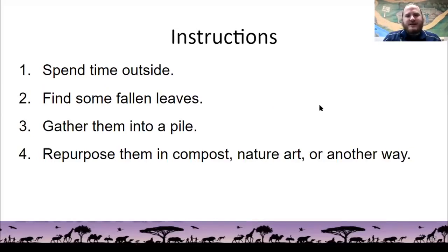And the instructions are, first, spend some time outside. Fall is awesome. There's a lot of amazing things to see and experience in the fall. So don't feel like just because it's getting a little bit colder out that you have to automatically start spending all of your time inside. And then when you're outside, find some fallen leaves on the ground and gather those leaves into a pile. And once you have that pile of leaves, there are a lot of different things you can do. One of them is you can repurpose them into compost. Another is repurpose them into nature art. And then as we saw, there are a lot of other ways. And feel free, by the way, to add other things you can do with leaves in the comments section.